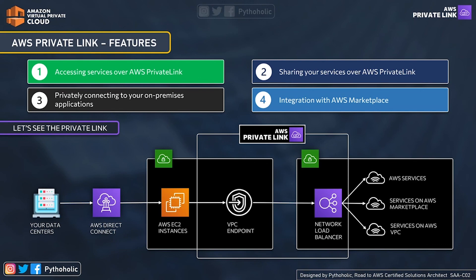There is another option using a gateway load balancer to create a Private Link connection, which we will talk about in the next session. For now, understand that you have your data centers with Direct Connect connections, you connect privately to your VPC, create your VPC endpoint using the VPC endpoint service, and from there connect to any services you want. Make sure a service endpoint is available; if you want to access generic AWS services, you can use the AWS services list.